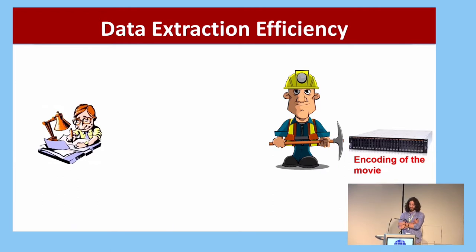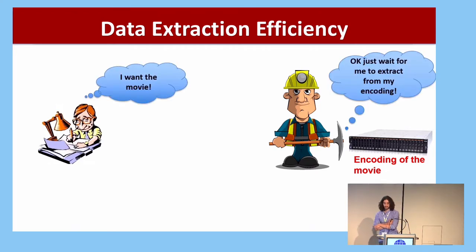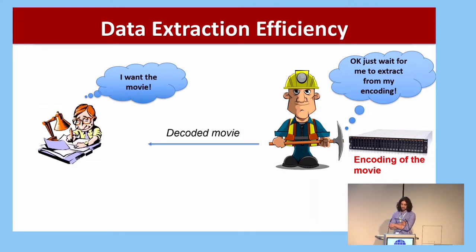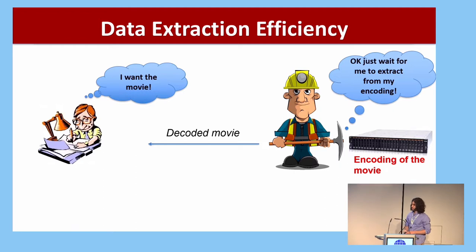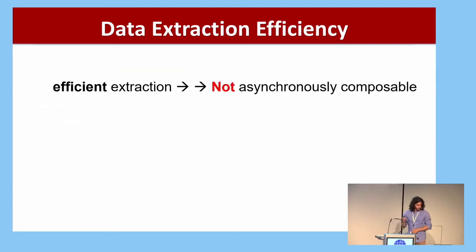Another concern is how efficient it is to extract data from a useful proof of space. If somebody wants to retrieve a movie the miner is storing and that takes a really long time, it may be undesirable for the application — though it could still be useful for storing archival backups.